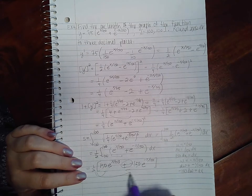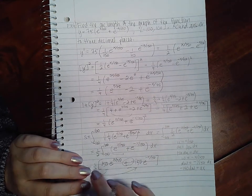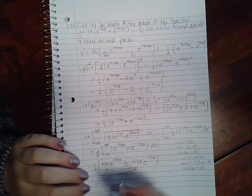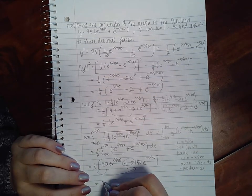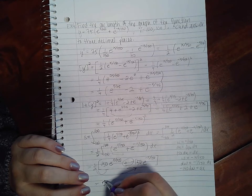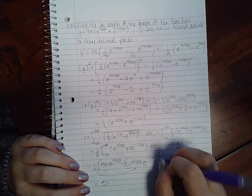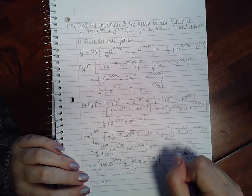And then I can distribute this 1 half, or factor out the 1 half. And then factor out the 150 and reduce it with a 2. You end up with 75. Oh I still have to evaluate it from negative 100 to 100.